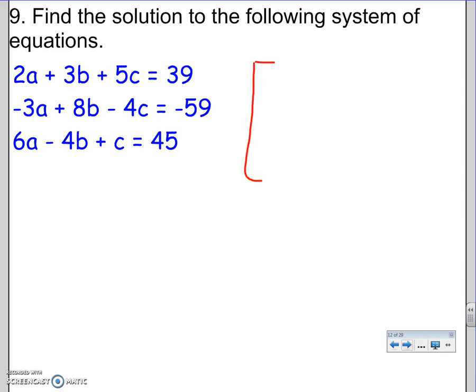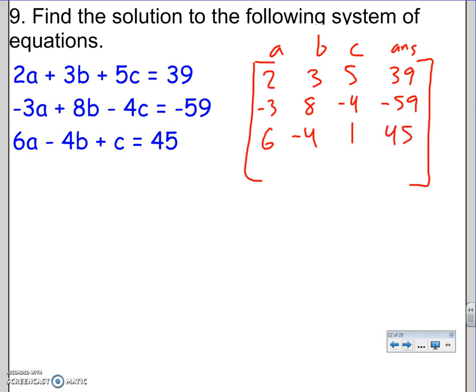So I'm going to make a 3 by 4. I'll label the top. A, B, C, answer. So it goes 2, 3, 5, 39. It goes -3, 8, -4, -59. 6, -4, positive 1. Just let that in 45. If letters missing, put a 0 there.